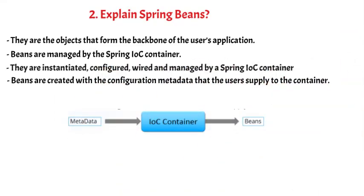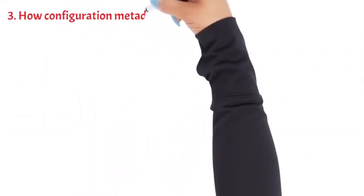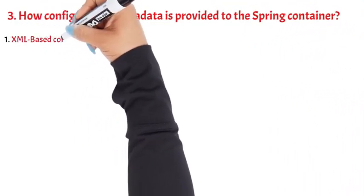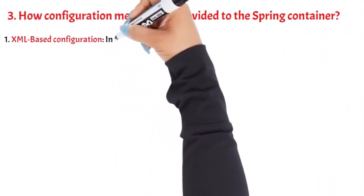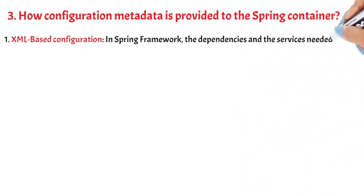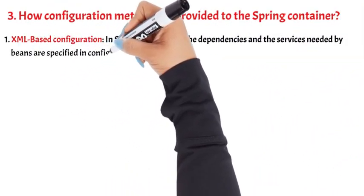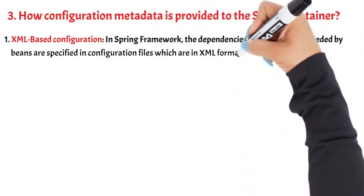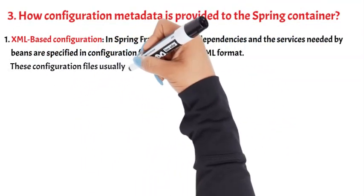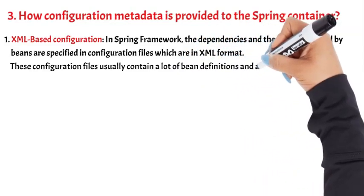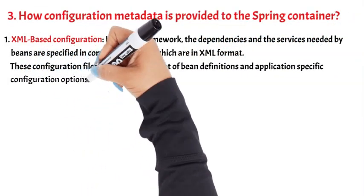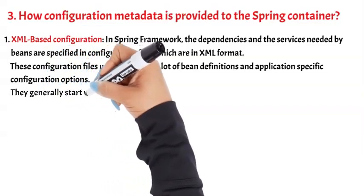Question 3: How is configuration metadata provided to the Spring container? 1. XML-based configuration. In Spring Framework, the dependencies and the services needed by beans are specified in configuration files which are in XML format. These configuration files usually contain a lot of bean definitions and application-specific configuration options. They generally start with a bean tag.